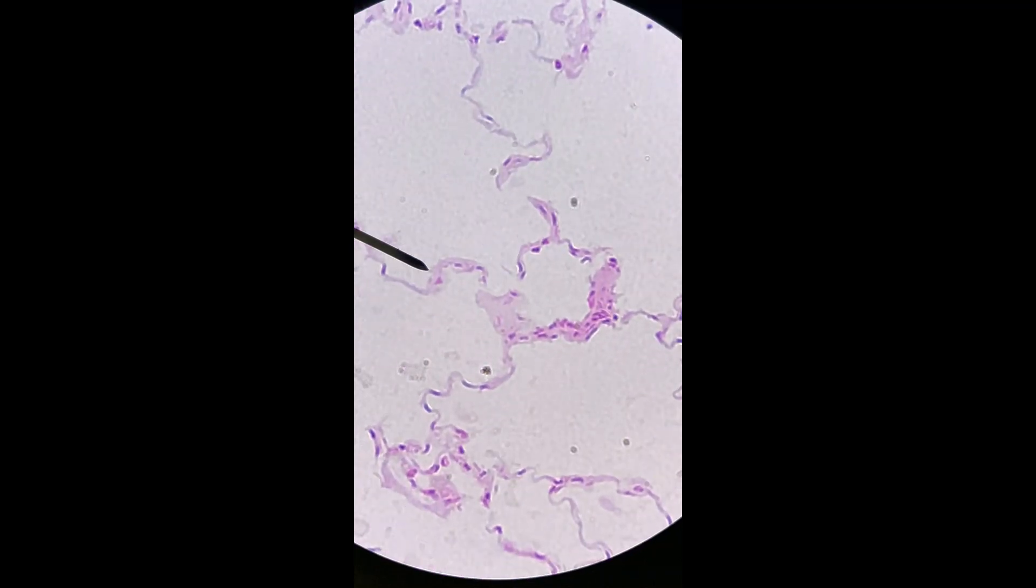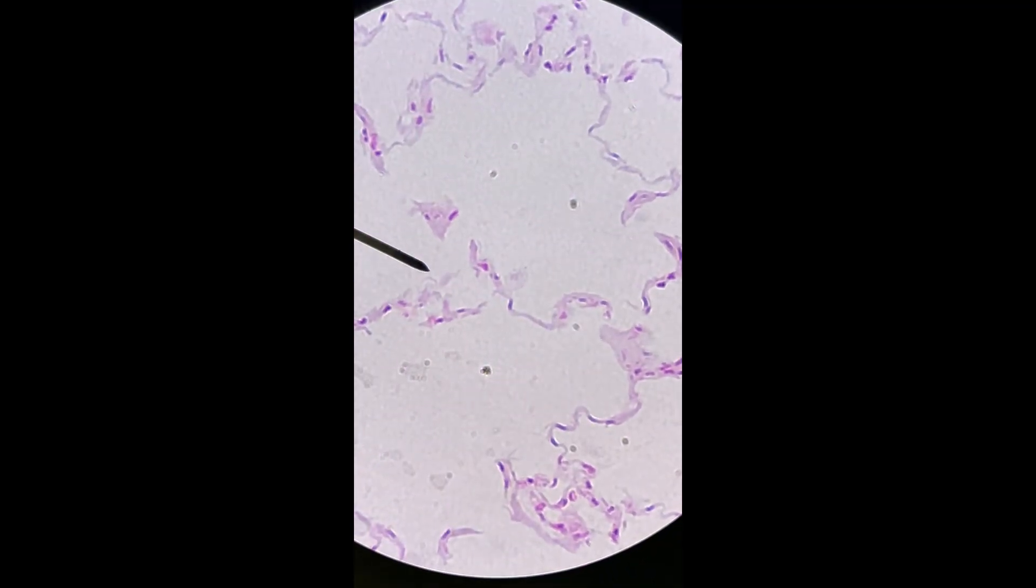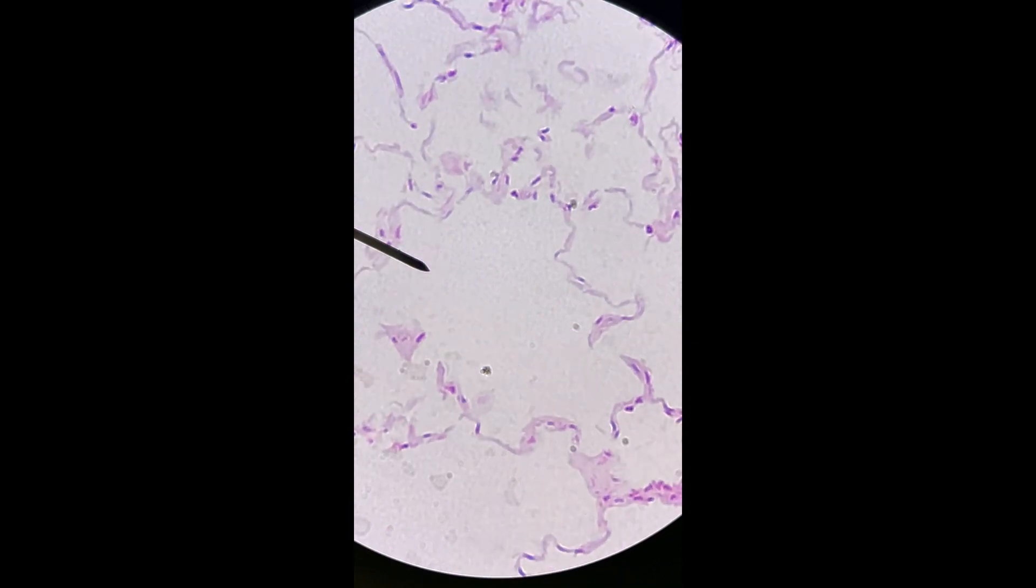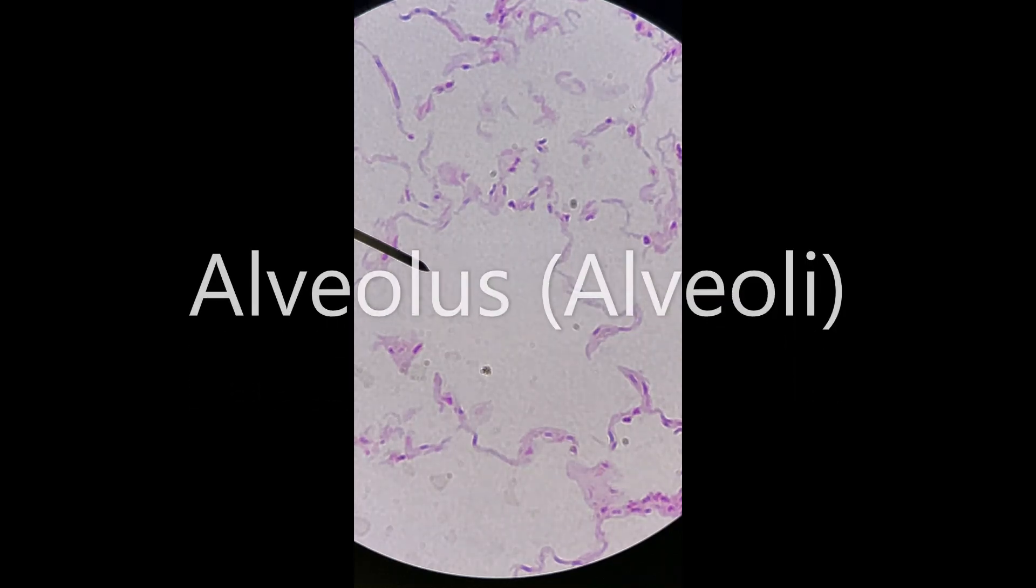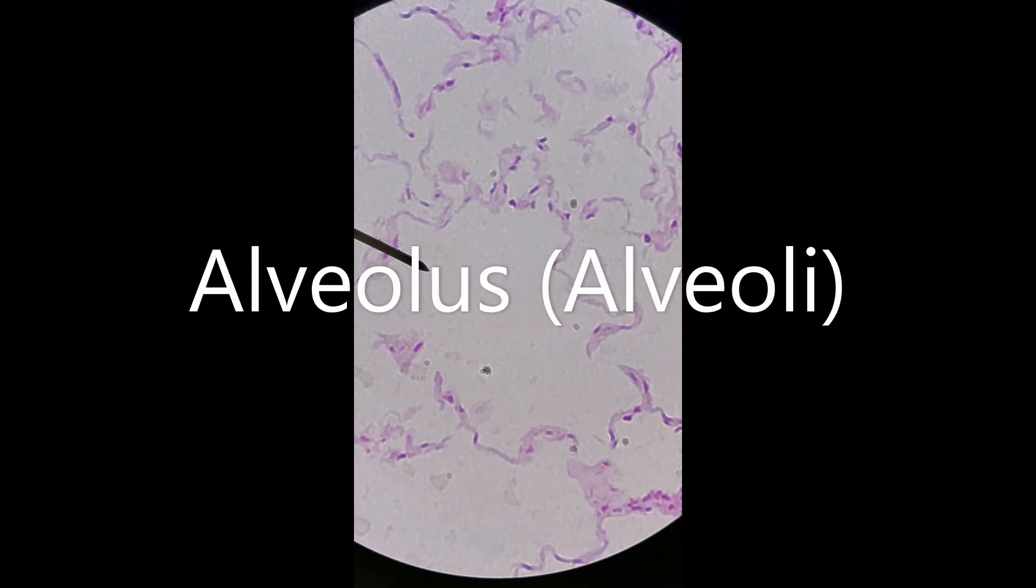So if I kind of pan around here, you can see these are little sacs. So this open space right here that the pointer's in is basically the lumen of an alveolus. So singular is alveolus, plural is alveoli.